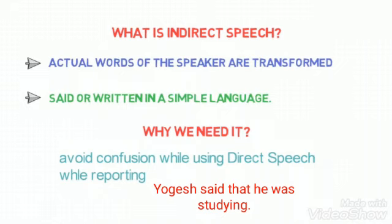'Yogi said that he was studying.' In this sentence, the conjunction 'that' is employed. The pronoun has been changed to 'he,' and the tense form is changed — 'is' into 'was.' Hence, this is called indirect speech.